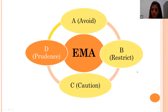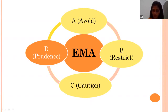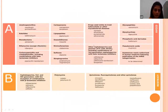Category B antibiotics are critically important in human medicine, and their use in animals should be restricted only to mitigate public health risks. Category C antibiotics should be used cautiously, only when D-group antibiotics are not found effective against diseases in sheep, goat, or other livestock. Category D antibiotics can be used as first-line treatment in veterinary practice, but must be used prudently — unnecessary use, excess administration, or prolonged administration should be avoided.